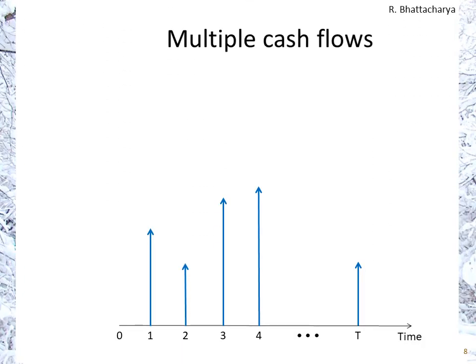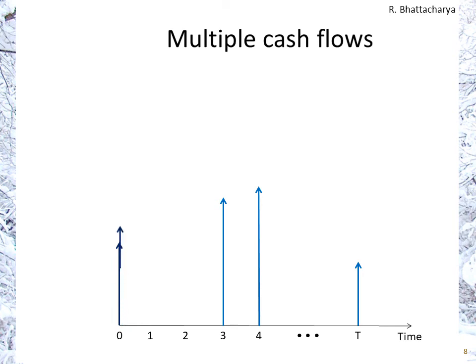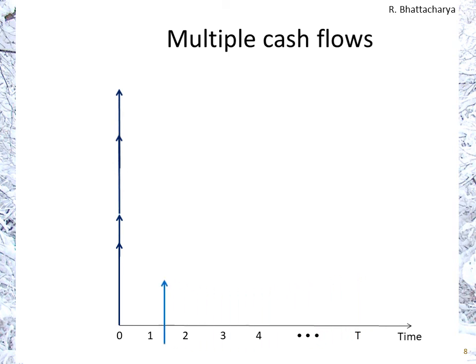Looking at it with multiple periods — it could be any number of periods, theoretically extending to infinity — all you have to do is calculate the present value for each individual cash flow and then add them up. Visually, the dark blue arrows represent the present value for each of those cash flows. Stacking them together represents the total value of all those cash flows combined.